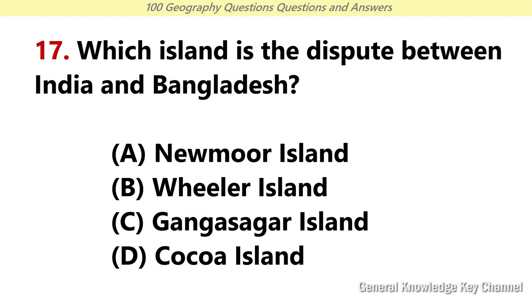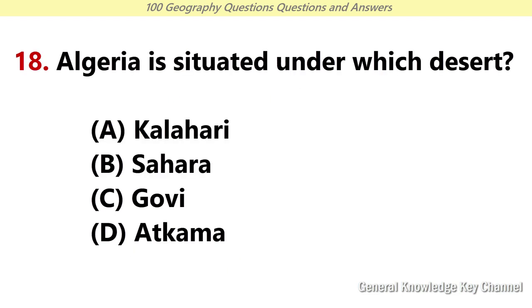Which island is the dispute between India and Bangladesh? Answer A: Newmoor Island. Algeria is situated under which desert? Answer B: Sahara.